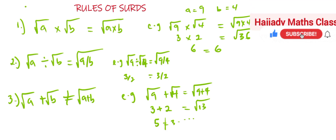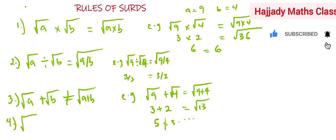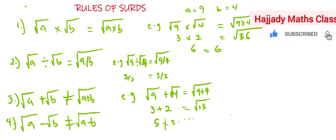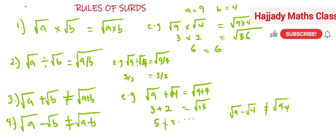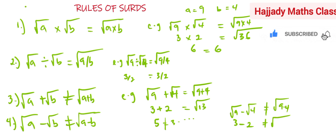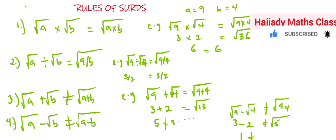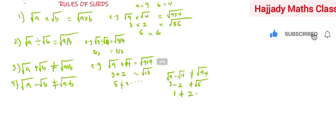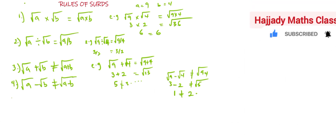Rule number four: root A minus root B can never be equal to root(A − B). For example, root 9 minus root 4 cannot equal root(9 − 4). Root 9 is 3, root 4 is 2, so 3 − 2 = 1. But root(5) is about 2-point-something. One is not equal to that, so they are not equal.